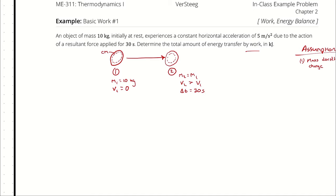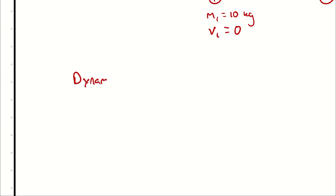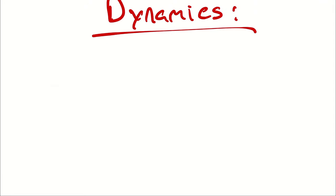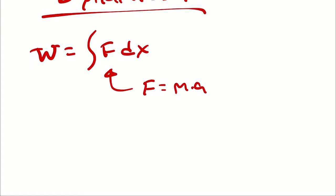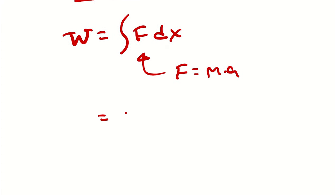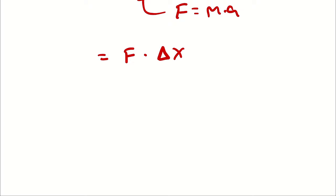There are basically two ways we could approach this problem, and the difference between the two is really only a matter of perspective. The first way is probably how most students would approach it having just gotten out of a dynamics course — I will call that the dynamics perspective. We approach it by thinking about the work itself: the integral of force with respect to displacement. Our force is mass times acceleration, and both mass and acceleration are constant, therefore force is constant and can come out of the integral, giving us force times delta x.